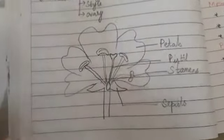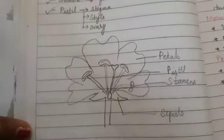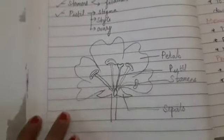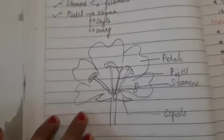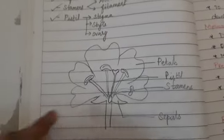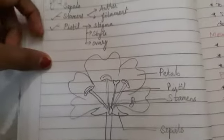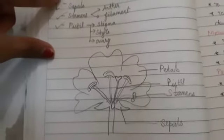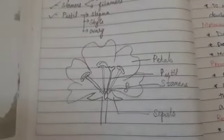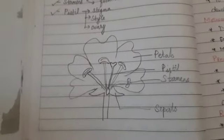This much is enough for the parts of a flower. If you can draw it more beautifully, you can practice and bring it. Watch this video again and again and practice this diagram well, children. If you have any doubt in drawing the diagram, you can ask me. Thank you, children.